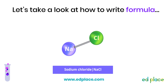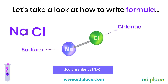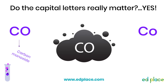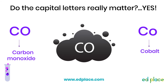A formula is a shorthand way of showing the elements in a compound. The formula for sodium chloride is NaCl. This compound must be made up of two elements, as there are two capital letters present in the formula. By consulting the periodic table, you can discover that this compound is made up of one sodium atom and one chlorine atom. Take extra care when writing symbols — for example, writing CO instead of Co completely changes the substance. CO is the formula for the compound carbon monoxide, a deadly colourless gas, whereas Co is the symbol for the element cobalt, a magnetic metal found in the Earth's crust.